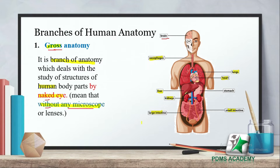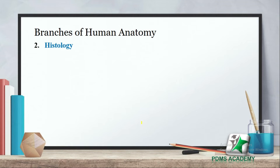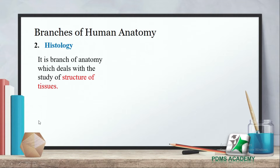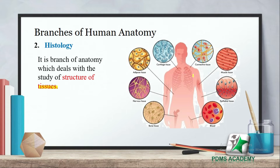The next branch is histology. It is a branch of anatomy which deals with the structure of tissue. Tissues are groups of cells which perform similar functions. When we study tissues, we call it histology. Our body has different types of tissues.